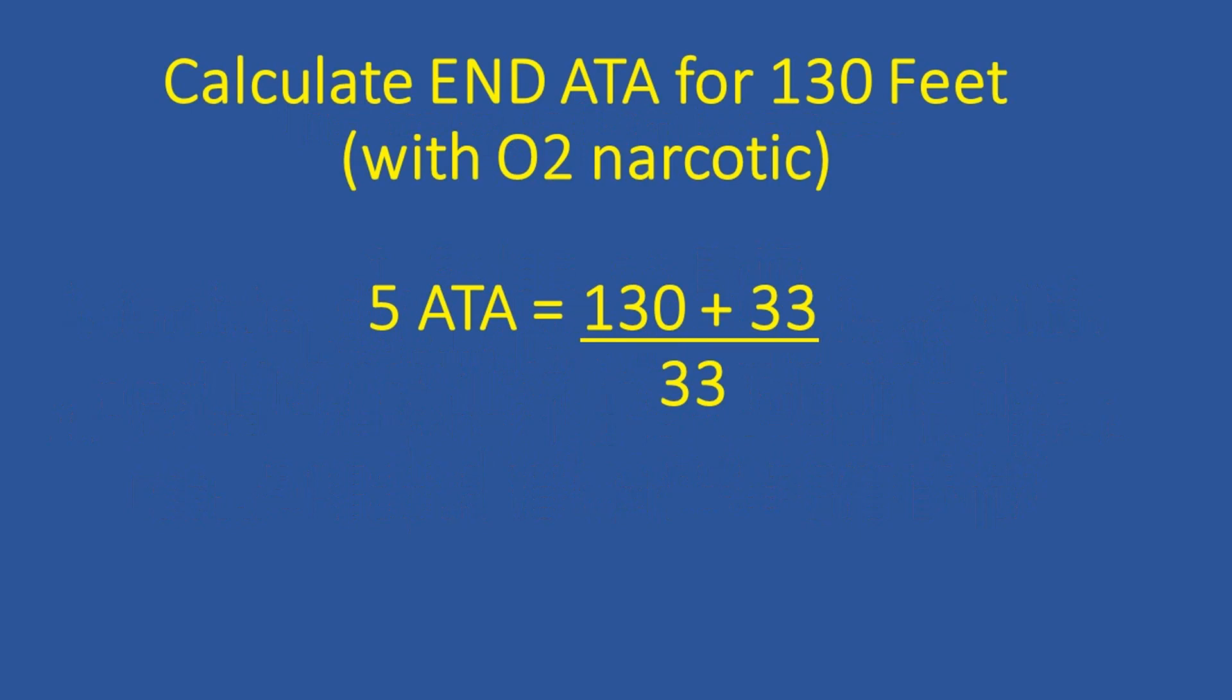So here we're calculating the equivalent narcotic depth, the atmospheres absolute for 130 feet, and again we're assuming that O2 is narcotic. So we have 130 feet plus 33 feet divided by 33 feet, and this yields five atmospheres absolute for our equivalent narcotic depth.